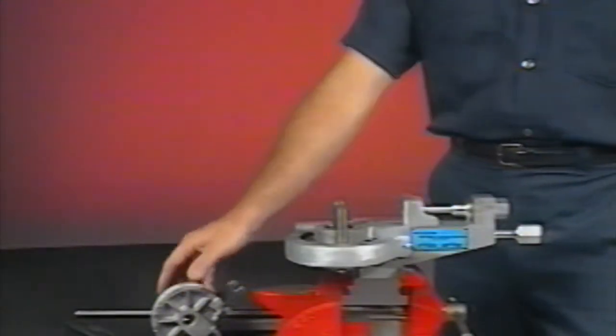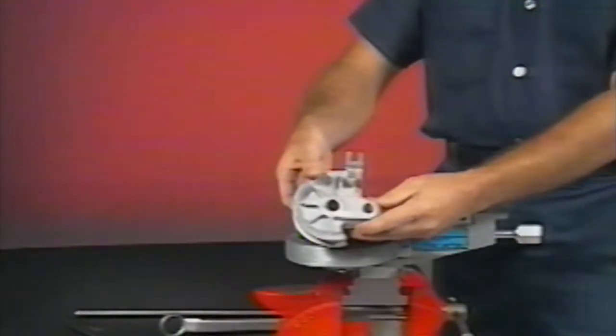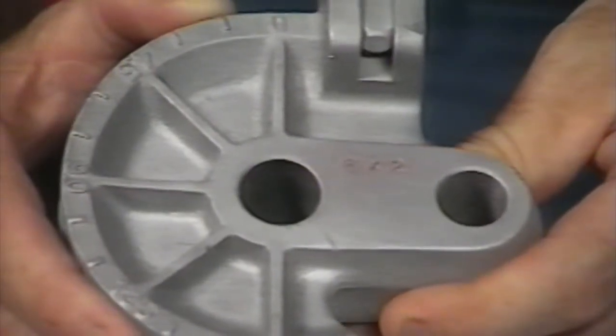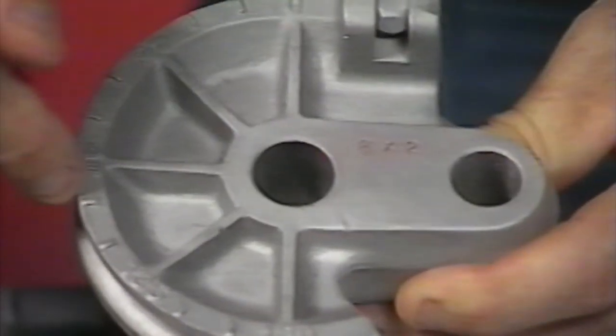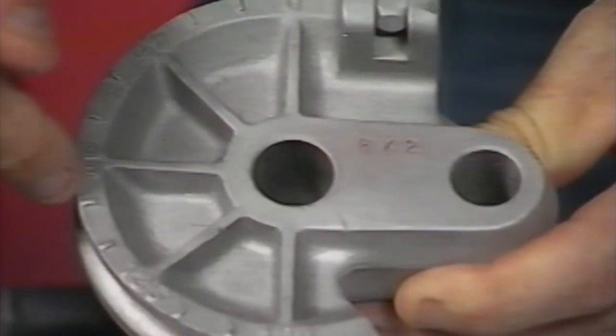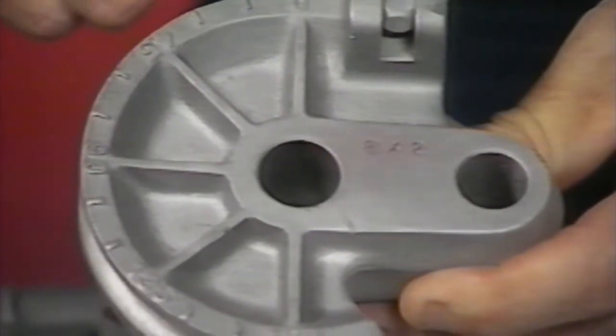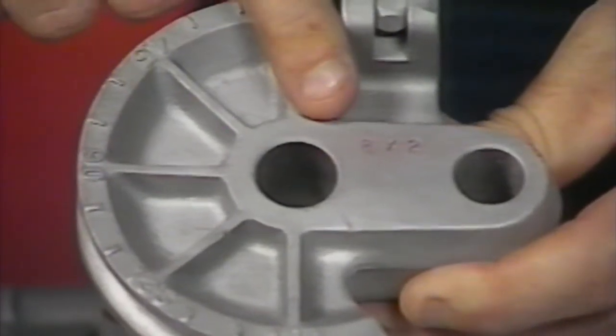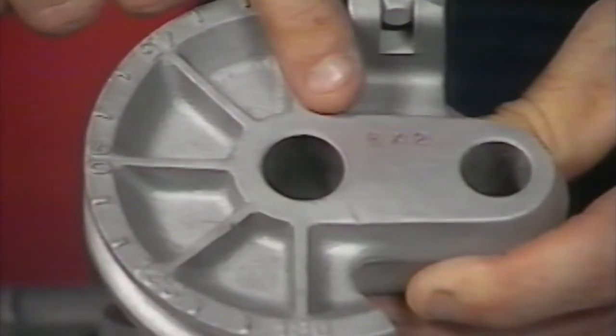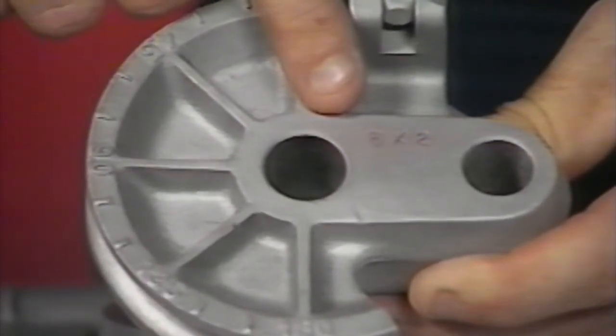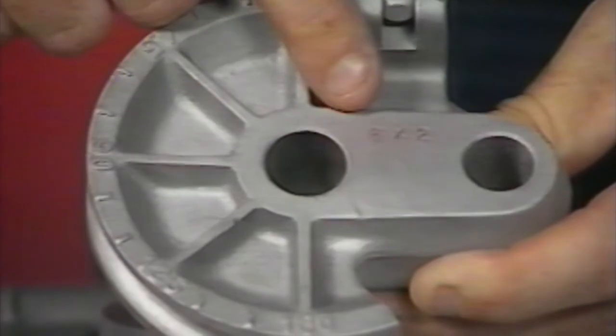Step two, select the proper radius block. The radius block is determined by the tube OD and the desired bend radius. The bend radius is always measured from center line of the tube to the center line of the radius block. In this case, we're using an eight by two or half inch tube that will bend to a two inch radius. The tube size and the bend radius are stamped on the top of each radius block for easy identification.